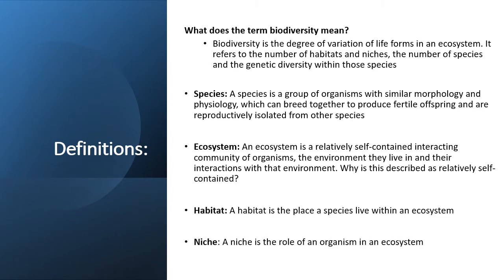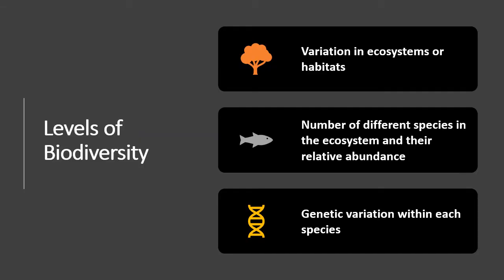We also have habitats and niches. A habitat is basically the places species live within an ecosystem, while a niche refers to the role of an organism in the ecosystem. The levels of biodiversity that you might encounter in questions — for example, you'd be asked to state how a very diverse place contributes to biodiversity — requires you to mention that it contributes by having various ecosystems, various habitats, a high number of different species, and high genetic variation within each species.